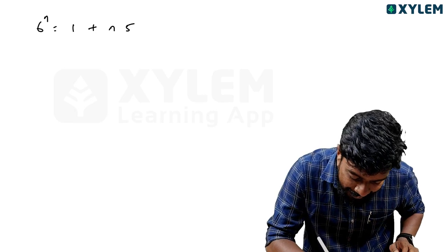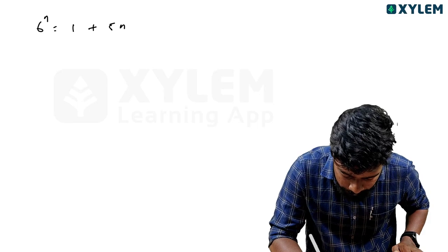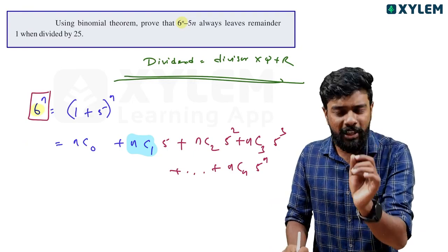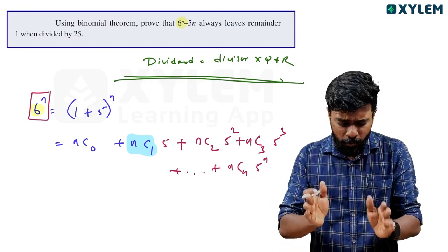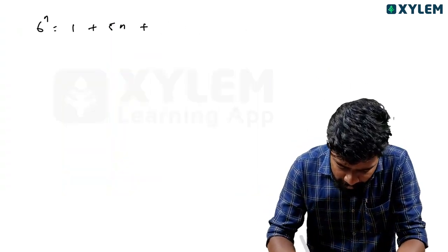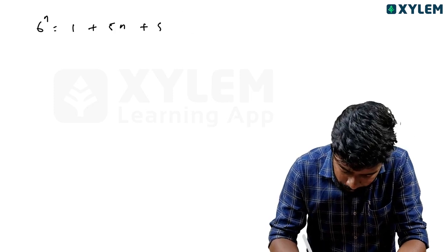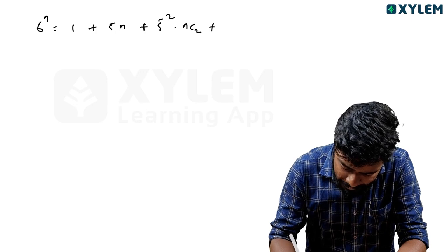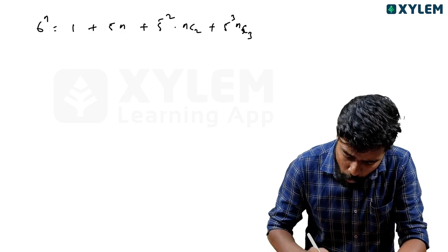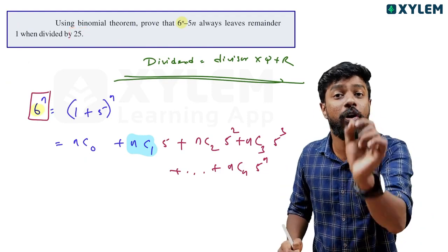So we are going to get 5n. n into 5 is the same as 5 into n, that is 5n. Plus nc2 times 5 squared. 5 squared is the same as 25. So this gives us nc2 times 25.